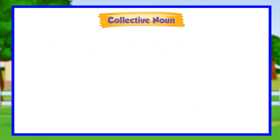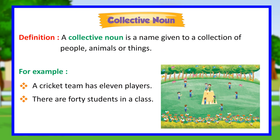Collective noun. Definition: a collective noun is a name given to a collection of people, animals or things. For example: a cricket team has 11 players; there are 40 students in a class.